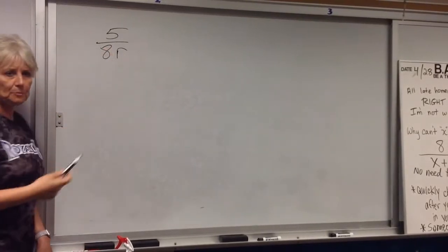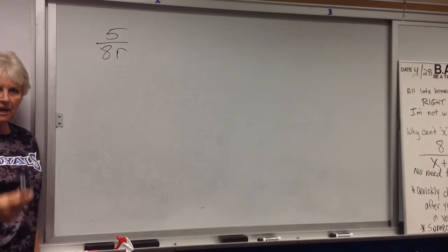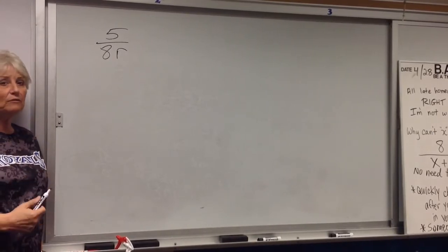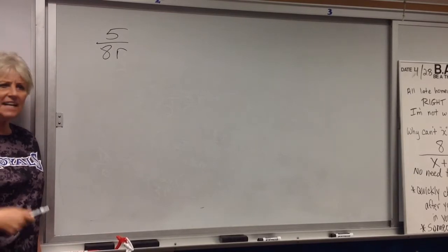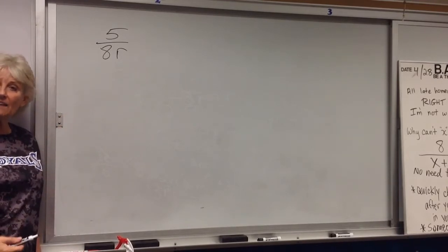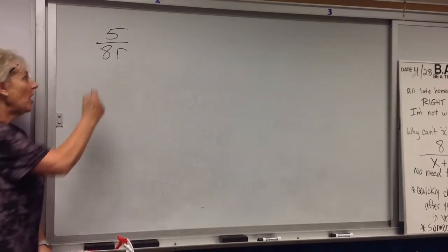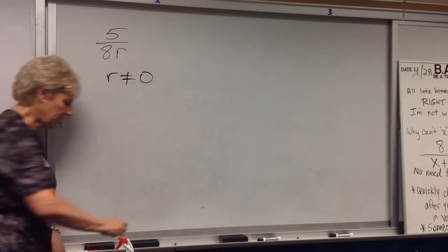All right, here's an expression that is simplified, but there is a value of r that cannot be. What is it? 8 times 8 is 64, nothing wrong with 64. Negative 8. Zero. You cannot have a zero denominator. r cannot be zero.